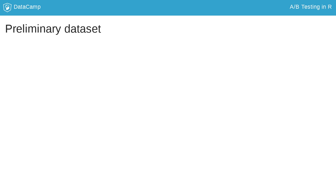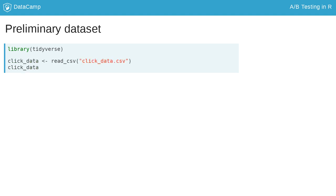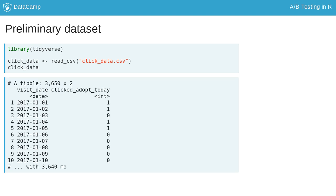Before we start building our experiment, we want to know what our conversion rates looked like before changing anything. Let's take a quick look at that dataset. Here I'm using the suite of packages called the Tidyverse, which should be familiar to you from DataCamp's course in the Tidyverse. We use the function read_csv from the readr package to load our data — here, click data. If we look at the first few rows, we see that we have two columns: visit date, which gives the day when someone visited the website, and clicked Adopt Today, which is a one if someone clicked on the button and a zero if they didn't.